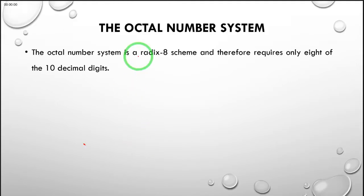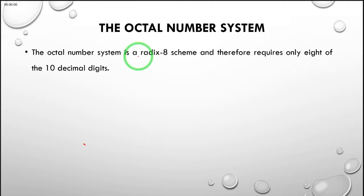The octal number system is a radix-8 scheme and it only requires eight digits from the available 10 digits. So we use digits 0, 1, 2, 3, all the way up to 7, and we see that digits 8 and 9 are not used or are invalid in the octal number system.